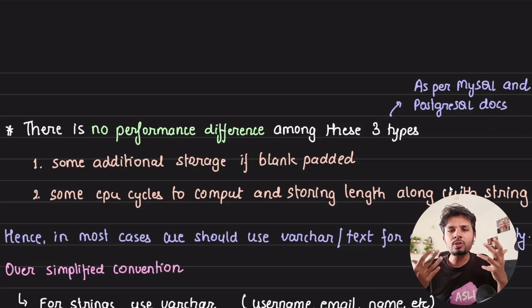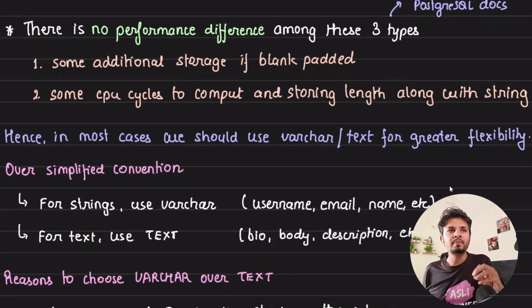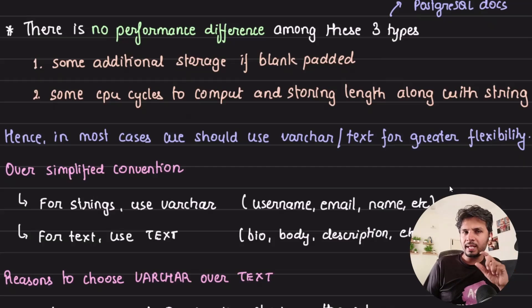How should you decide which one are you picking, varchar or text? One simple, oversimplified convention is: for strings use varchar, for text use text. For example, if you're storing username, email, first name, last name, typically you would be gravitating towards using varchar and it's perfectly fine.